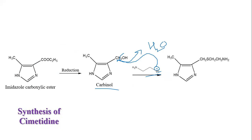The CH2 remains as it is, and there is a new sigma bond between the sulfur, because the thiol or sulfur moiety attacks due to its nucleophilicity. So CH2 is from the carbinol, then S, then CH2CH2, and NH2 — in that way we are getting this third structure. So imidazole carboxylic ester is reduced to carbinol, carbinol is treated with this moiety, and we are getting this third structure.